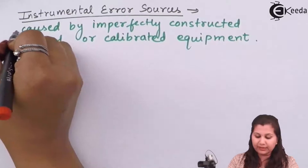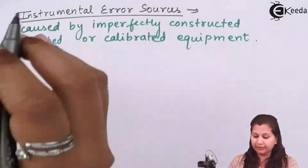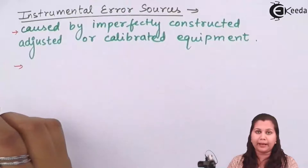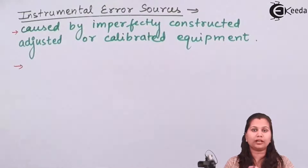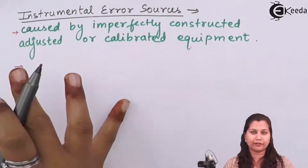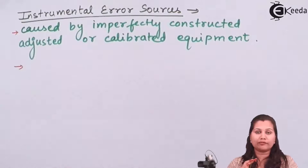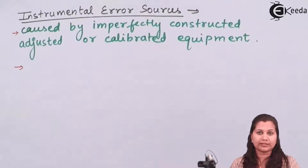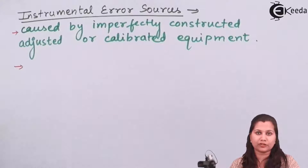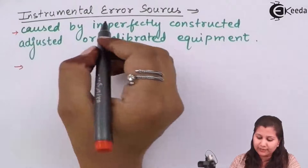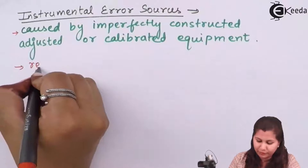We can reduce instrumental errors by leveling the instrument — meaning keeping it on a flat, non-vibrating surface. If the surface of the instrument is rough or not clean, errors can occur, so we should smooth the surface of the instrument.